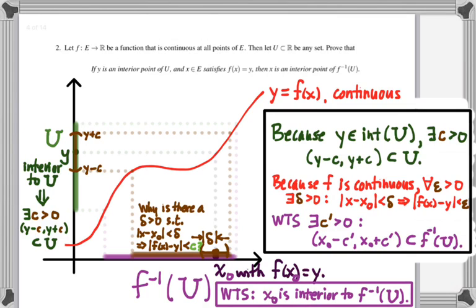So the main idea here is to figure out how to construct this c prime as the result of the delta that gets spit out from the definition of continuity. But in order to spit out a delta, we need to supply this definition with an epsilon. So where is the epsilon going to come from in the definition of continuity?